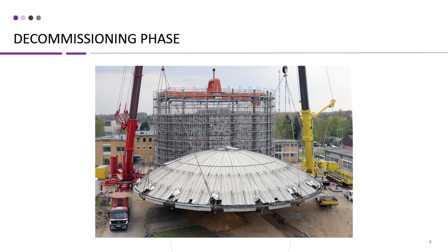After the operational phase, a nuclear power plant eventually reaches the end of its useful life and enters the decommissioning phase. Decommissioning involves the safe removal of the plant from service and managing its components and radioactive materials in a responsible manner. It can be a complex and lengthy process that includes decontamination, dismantling of structures, and waste management. There are different decommissioning strategies, including immediate dismantling, deferred dismantling, and entombment, depending on regulatory requirements, safety considerations, and site-specific conditions.